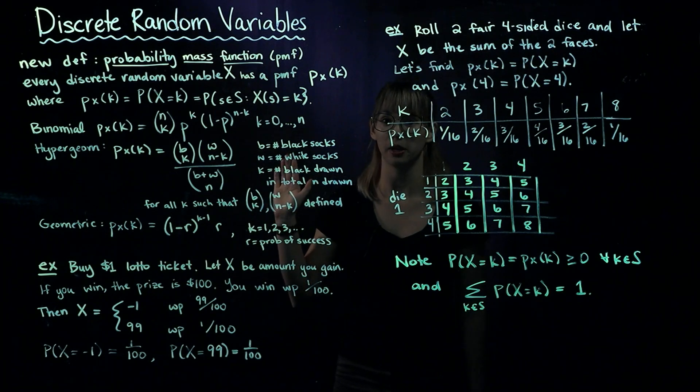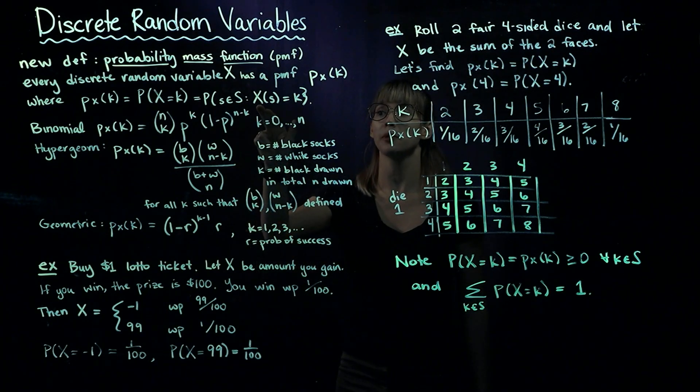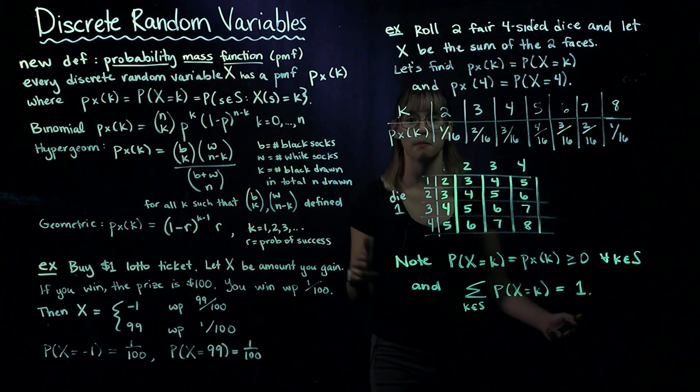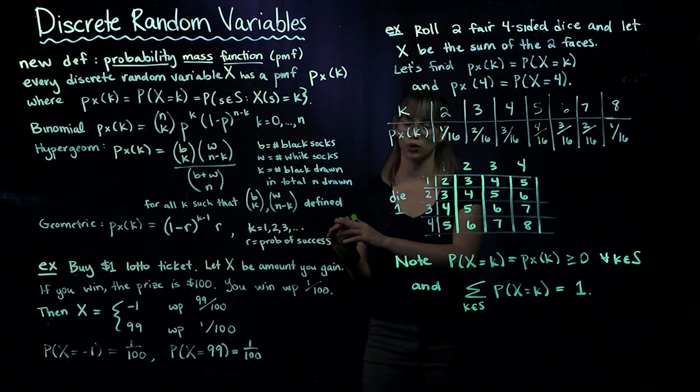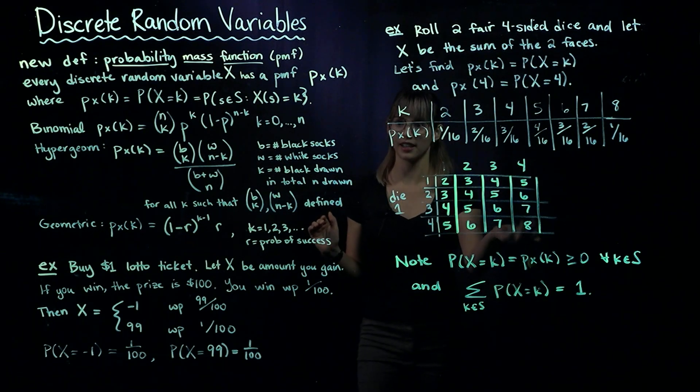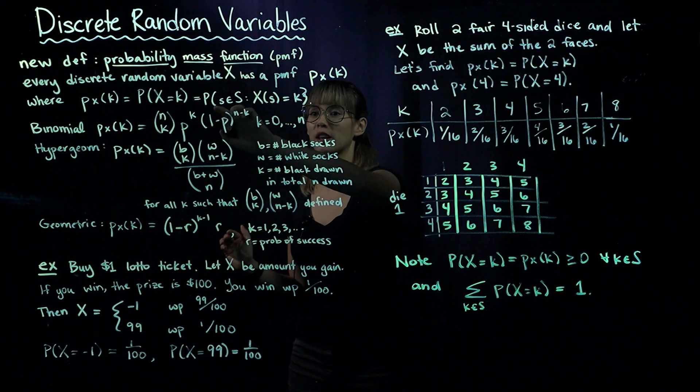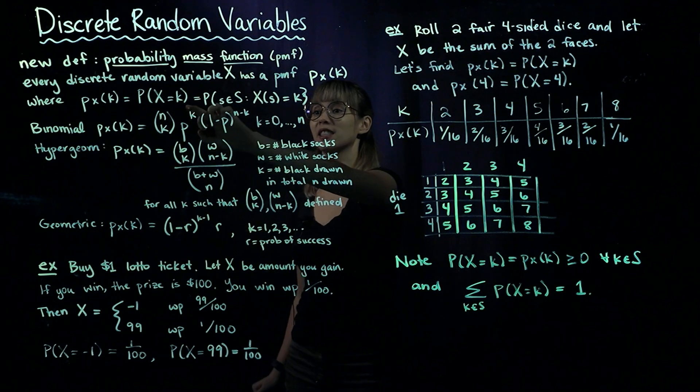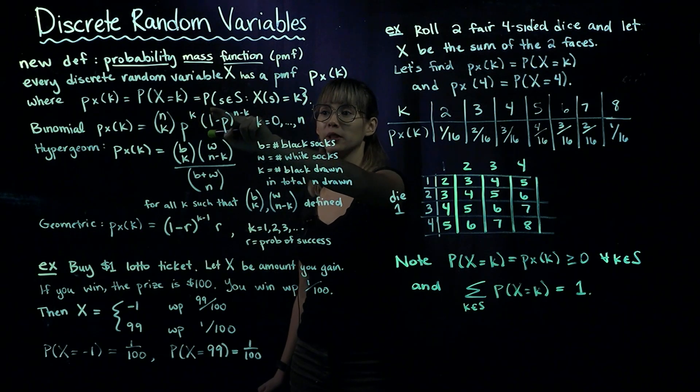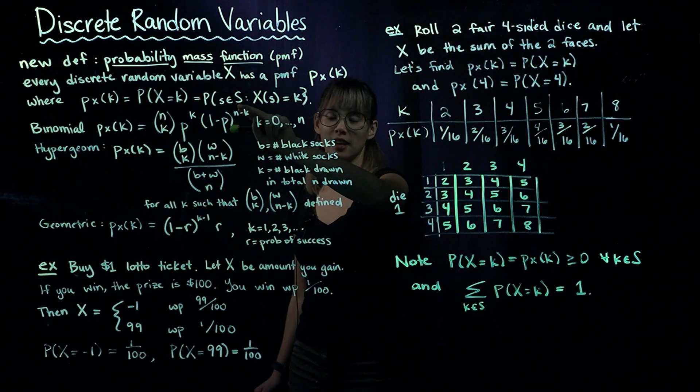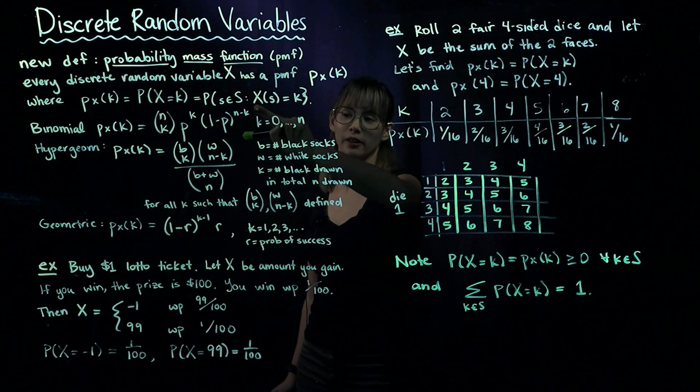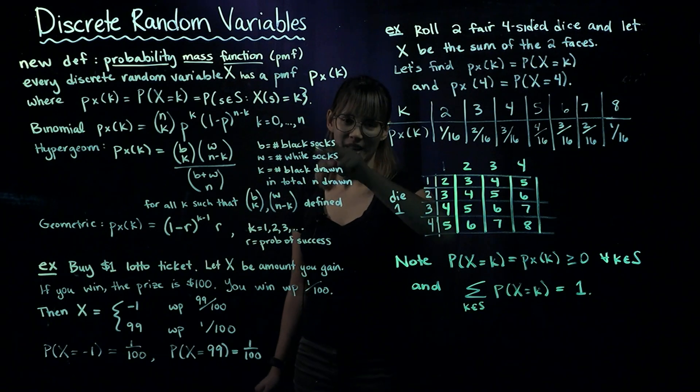More mathematically, remember that a random variable maps an event to the number line. The probability that X equals K is the probability of all elements in our sample space such that the random variable maps that element to K.